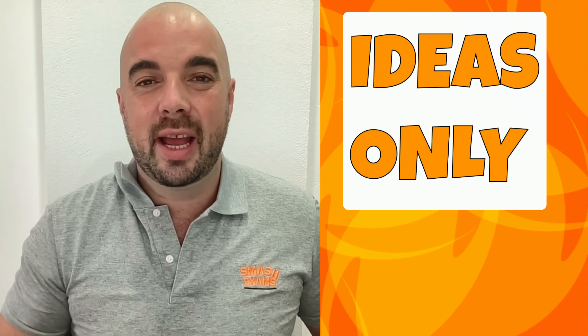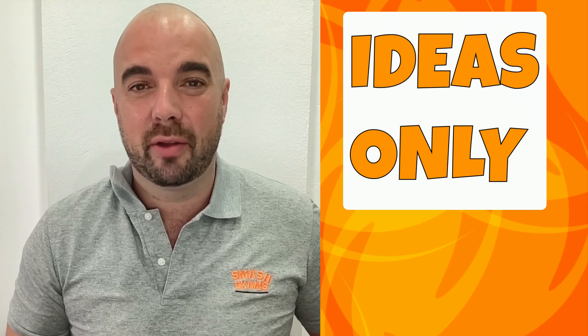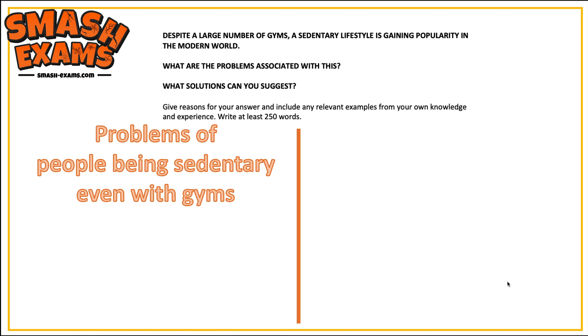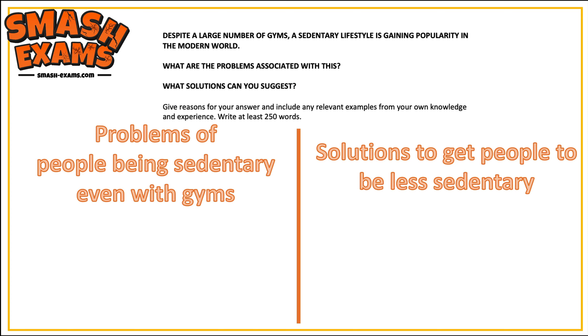We only need to come up with ideas at this stage — just brain dump the ideas onto the page. Here is my brain dump for the first things I thought of for problems and solutions based on the question. Despite a large number of gyms, a sedentary lifestyle is gaining popularity in the modern world. We need to look at the problems of people being sedentary even when there are gyms, and think of solutions to get people to be less sedentary.